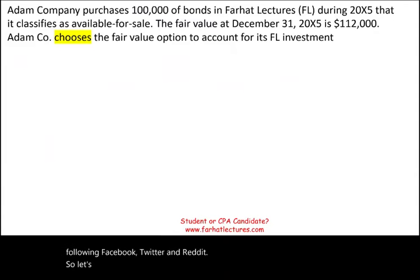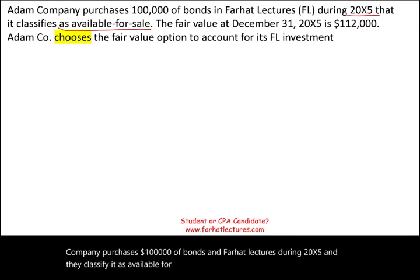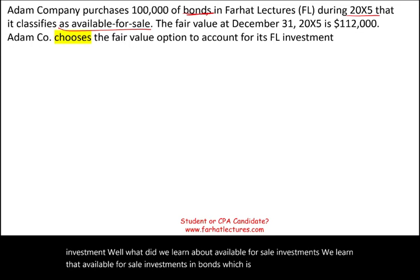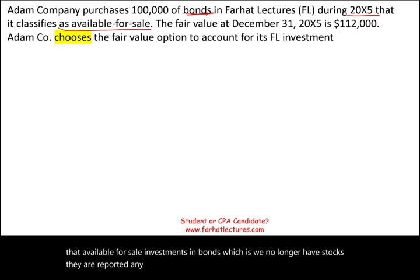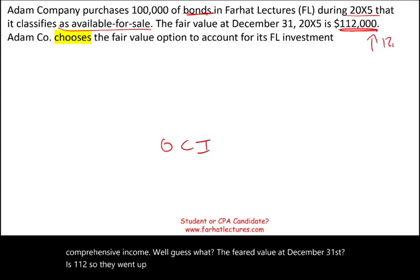So let's take a look at an example to illustrate the concept of fair value. Adam Company purchases $100,000 of bonds in Farhat Lectures during 20X5, and they classify it as available for sale. What do we know about available-for-sale investments? Any changes in fair value are reported in OCI — other comprehensive income. The fair value at December 31st is $112,000, so they went up in value by $12,000.